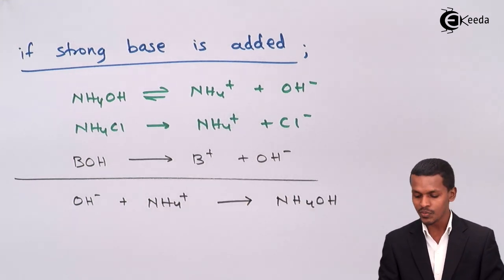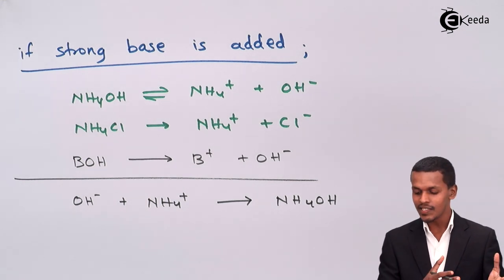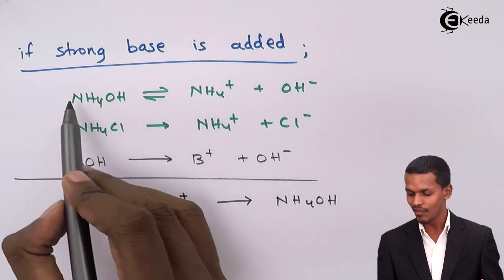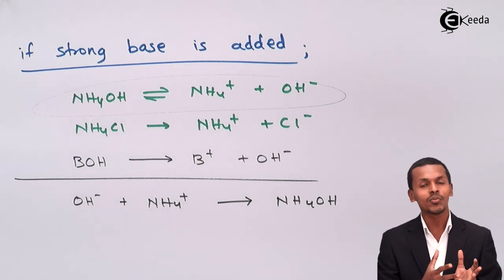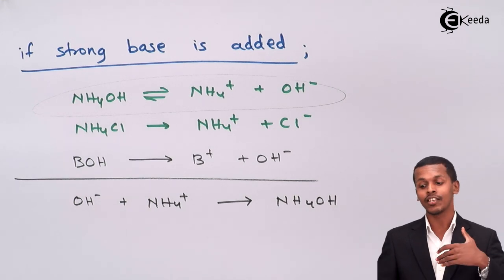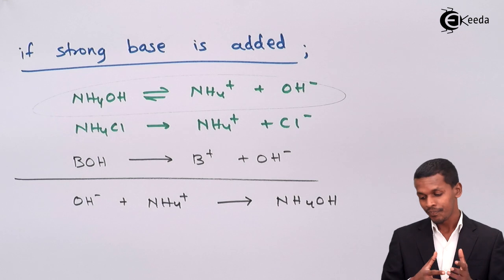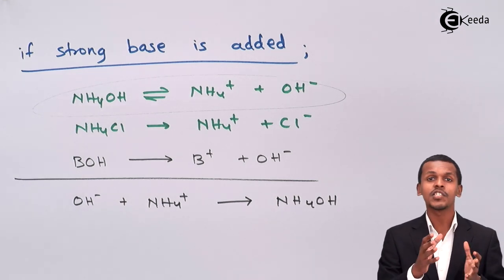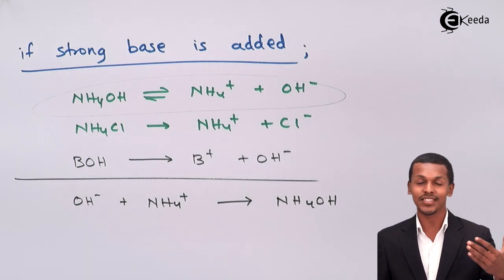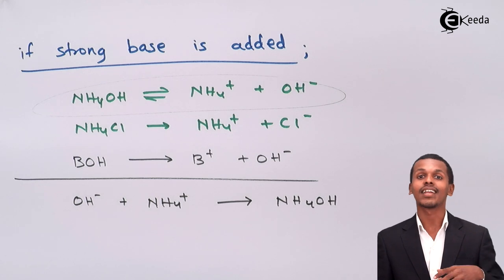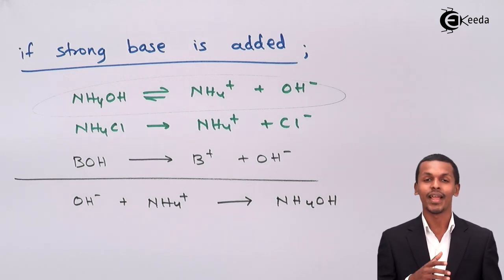However, the NH4⁺ ions in the buffer consume the excess OH⁻ ions to form NH4OH. Since NH4OH is already present and is a weak base, it does not produce excess OH⁻. By the addition of a strong base, the OH⁻ ions are consumed, so the solution does not become more basic. This property of consuming OH⁻ ions is known as reserved acidity. This is how the pH of the solution is preserved by the buffer, and neither the basic buffer can turn more basic nor the acidic buffer can turn more acidic.